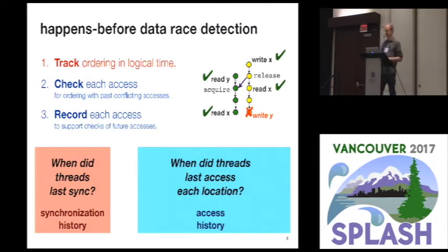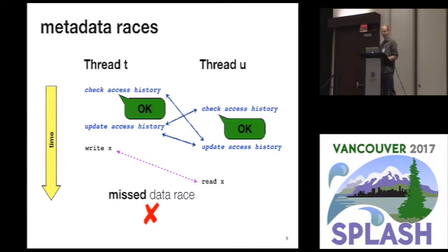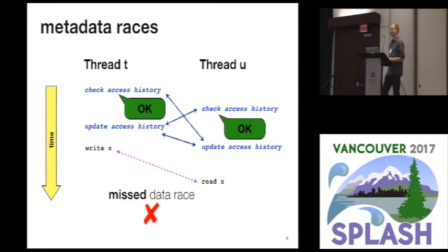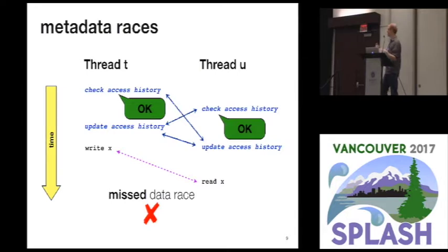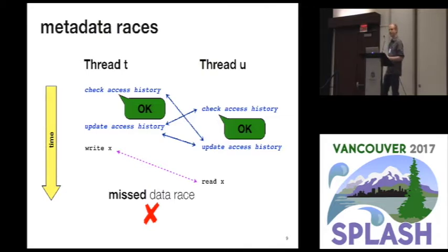That's our 10,000-foot view of what a dynamic data race detector needs to do. Now we need to consider the problem of how we insert these analysis barriers — a check and an update — before every memory access. If we're not careful about how we do this, the checks and updates might interleave such that two concurrent checks miss each other's updates. I'll call this a metadata race, and we've missed important information where our analysis really should say there's a data race here, but we completely missed it and falsely assume this is a safe program.